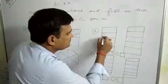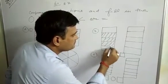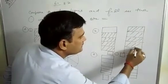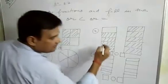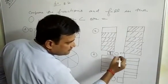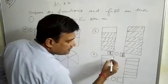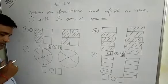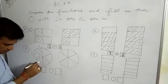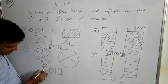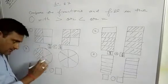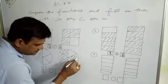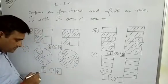In question 2, there are 4 parts shaded out of 5, giving 4 upon 5. In the second figure, all 5 parts are colored, giving 5 upon 5. So 4 by 5 is less than 5 by 5. In question 3, 3 parts are shaded out of 6, giving 3 upon 6. In the second figure, 5 parts are shaded out of 6, giving 5 by 6. So 3 by 6 is less than 5 by 6.